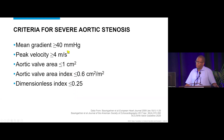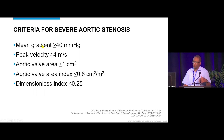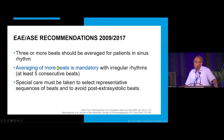You cannot call severe AS based on a small aortic valve area alone, but you can based on high gradients. If you have just a small aortic valve area, you need to show more evidence that the patient indeed has severe aortic valve stenosis.